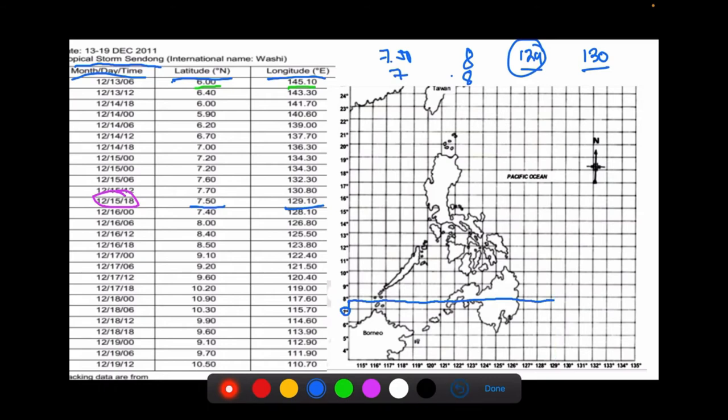So, the track of our typhoon Sendong on December 15 is around here. Okay? But I don't want to see any lines. The result of your tracking should only be dots. Let's say here. Okay? So, at the end of this activity, I should only see dots. This is just an example. Okay? Dots. I don't want to see any lines. Okay? So, at the end of this activity, you will see, you will track where typhoon Sendong passed. Take your time. That will be your activity for today.